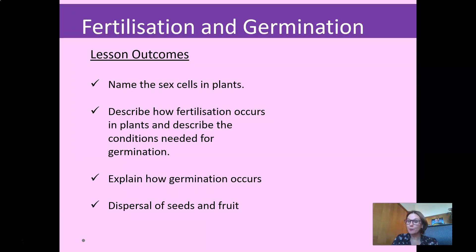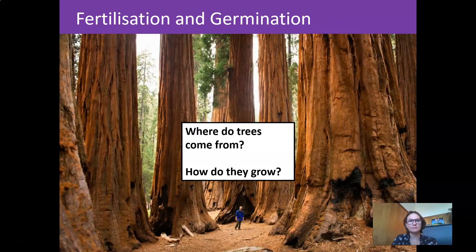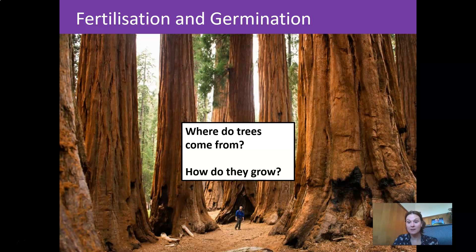Our outcomes for today: by the end of this lesson, we hope to be able to talk about the sex cells in plants and how fertilization occurs, the conditions needed for germination, how germination occurs, and the dispersal of seeds and fruit. We all know how flowers get pollinated by pollinators, and that pollination is the transfer of pollen from the male part — the stamen — to the female part — the pistil. But what happens once this pollination has occurred?